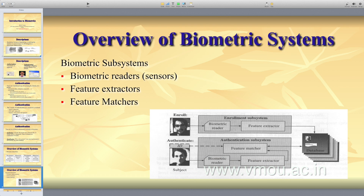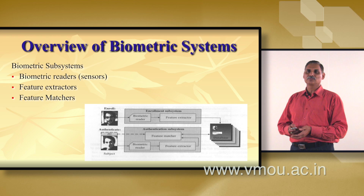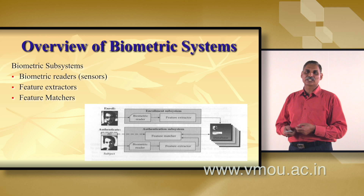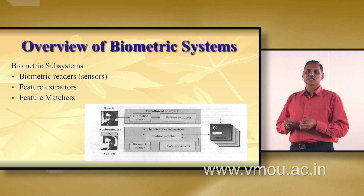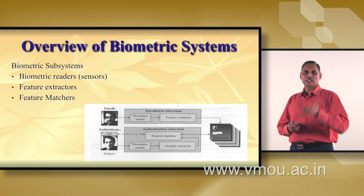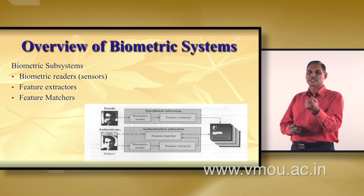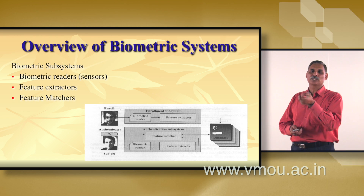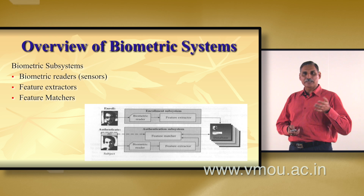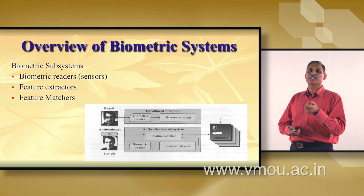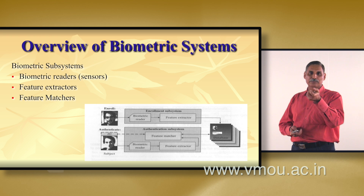A biometric system primarily consists of three subsystems: the biometric reader (sensor), the feature extractor — where the image is represented in terms of features rather than the entire image — and the feature matcher, where based on the feature vector, matching is done for identification or verification. We have a photograph captured by a camera, the feature extractor extracts salient features from the image, and those features are stored into a database.